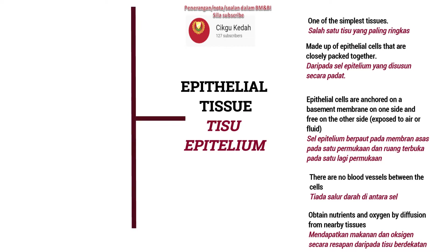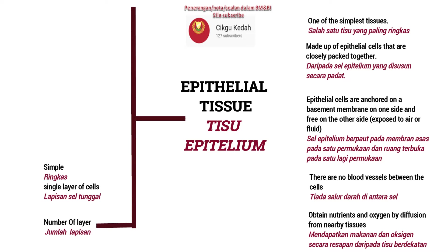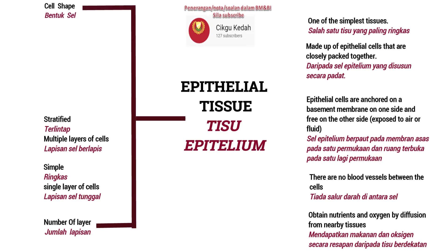There are two criteria for classifying epithelial tissue. The first is based on the number of layers: either simple, a single layer of cells, or stratified, multiple layers of cells. The second is based on cell shape: either squamous, cuboidal, or columnar.